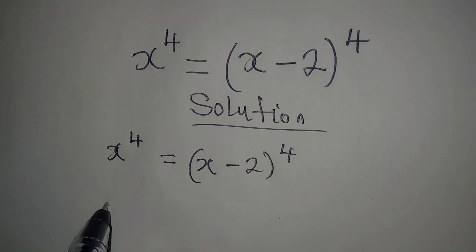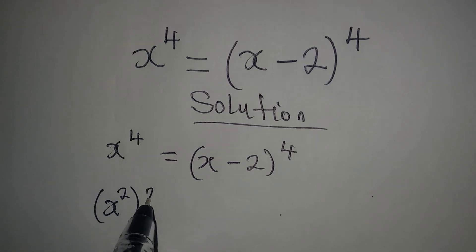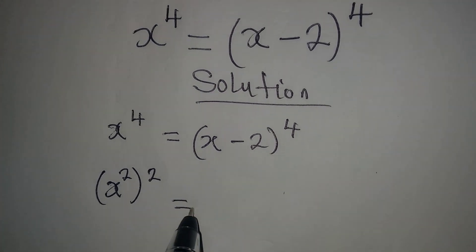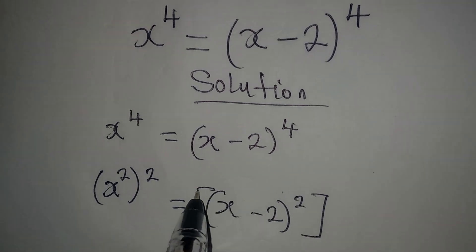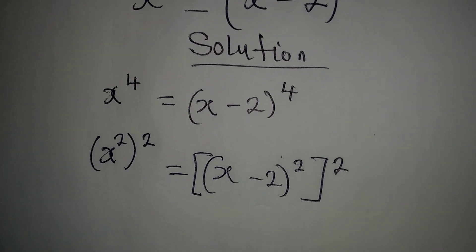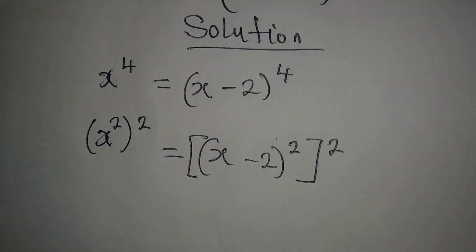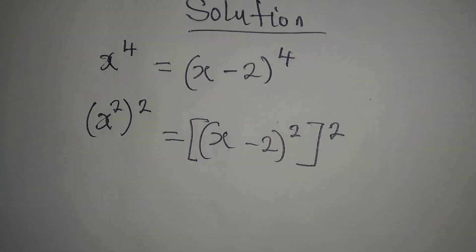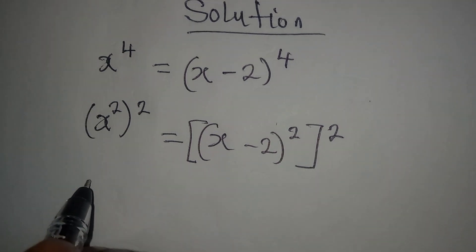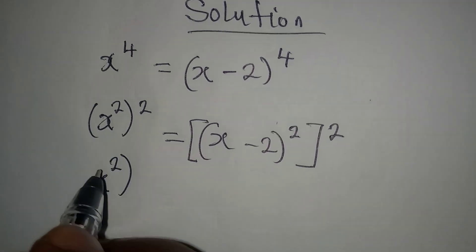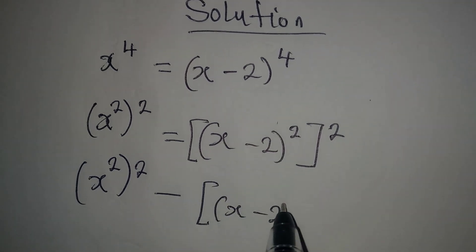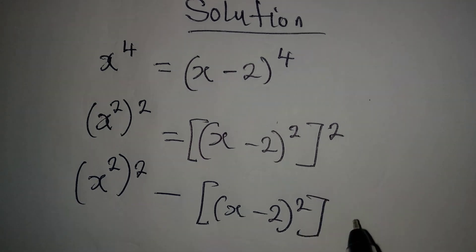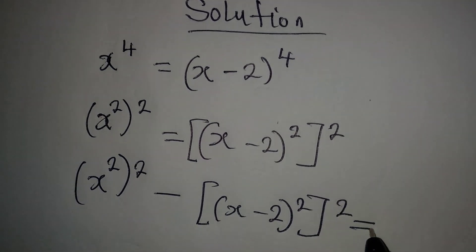The first step I want to take is to rewrite this as x squared, to the power of 2, equal to x minus 2 squared, to the power of 2. Because if you want to remove the bracket, you will still have power of 4. Now bring this to the left, so that we have x squared to the power of 2 minus x minus 2 squared to the power of 2, and this will be equal to 0.